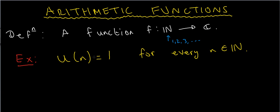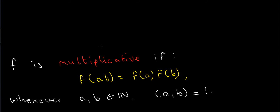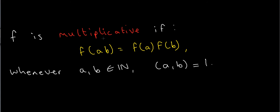A very important property is the notion of a function being multiplicative. A function f is multiplicative if f(ab) equals f(a) times f(b), whenever a and b are natural numbers — so positive integers — and a and b are coprime.